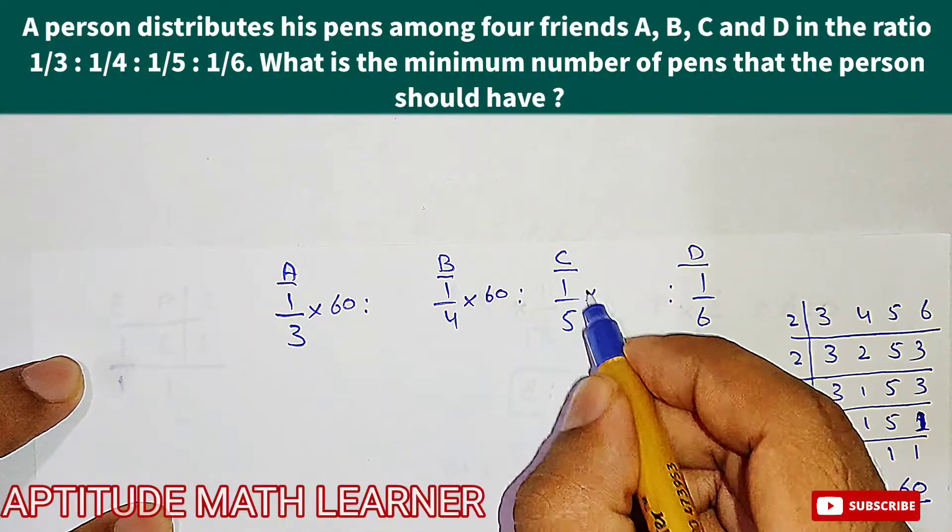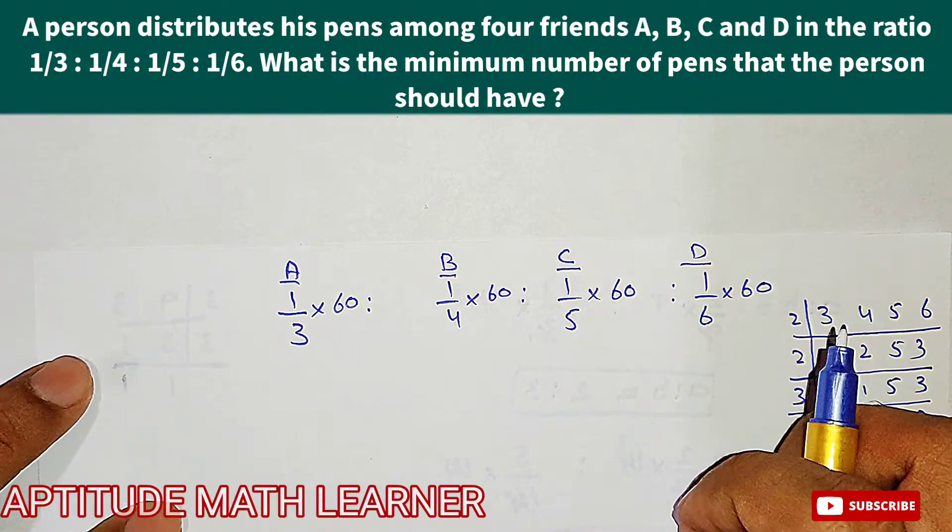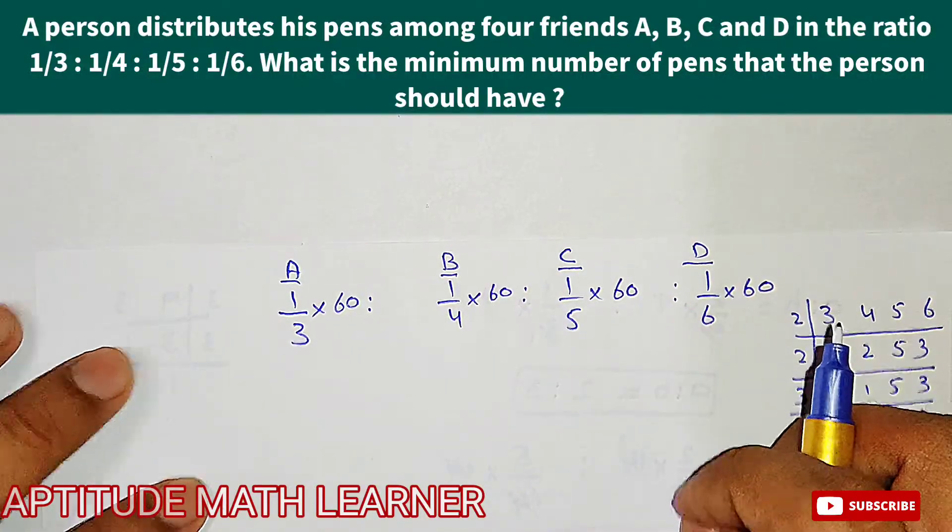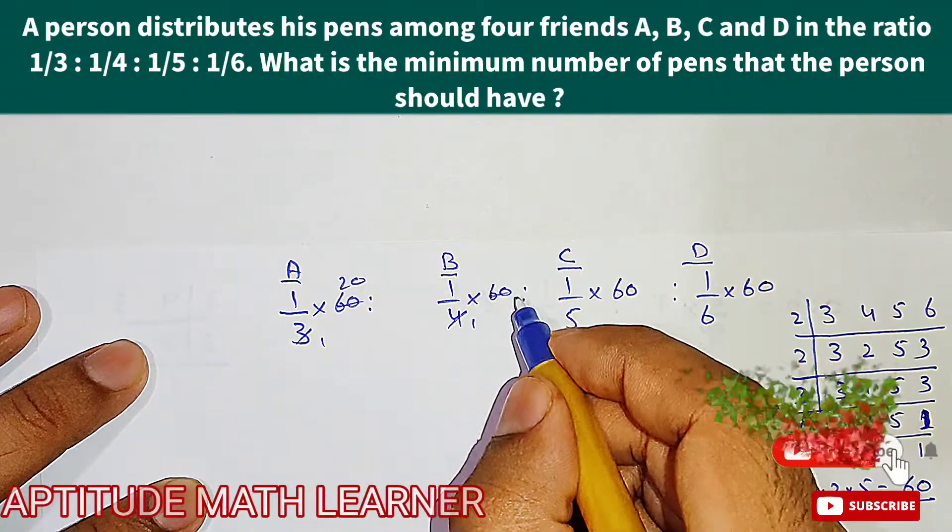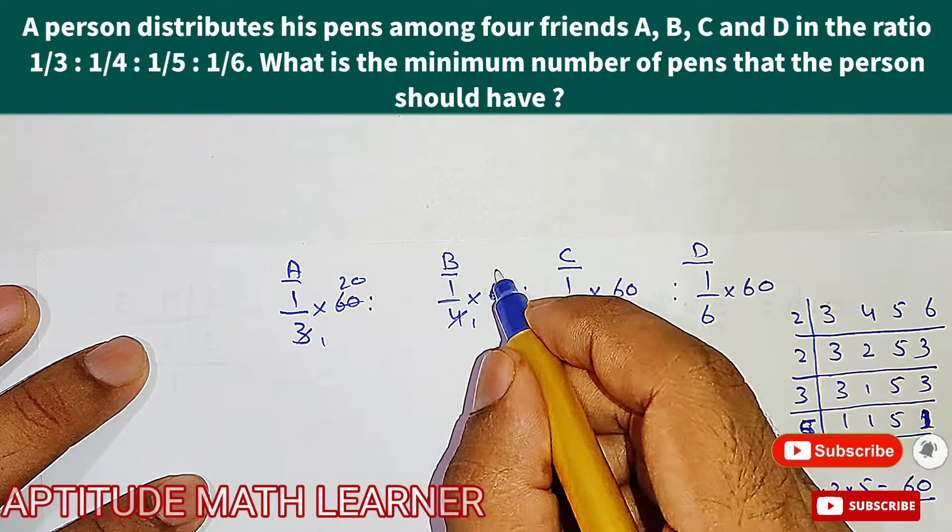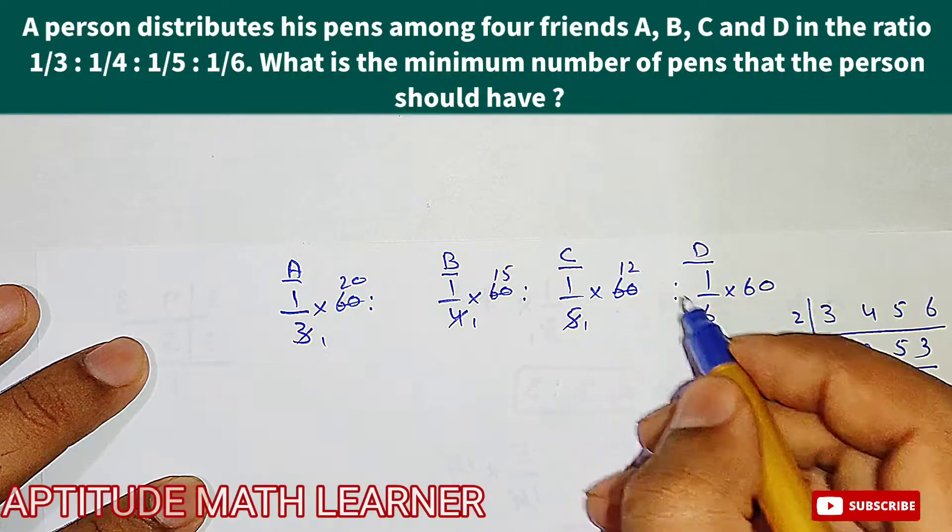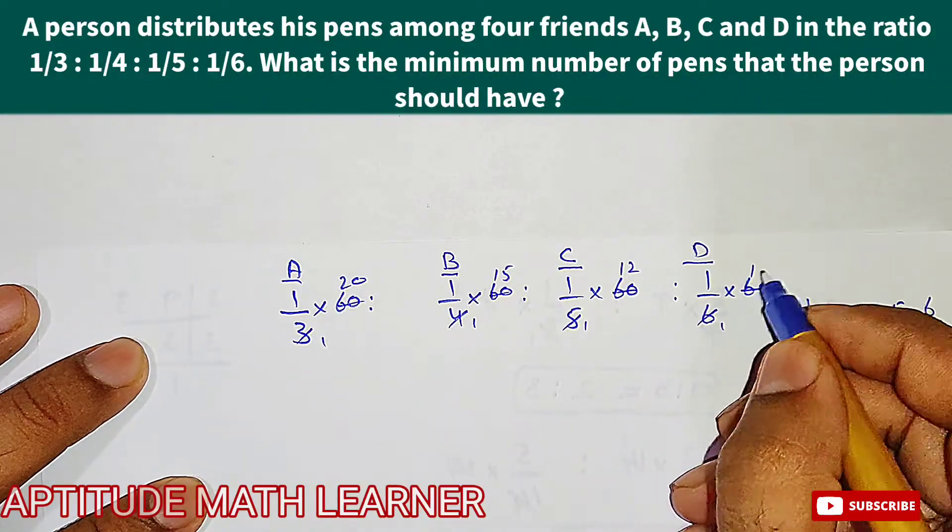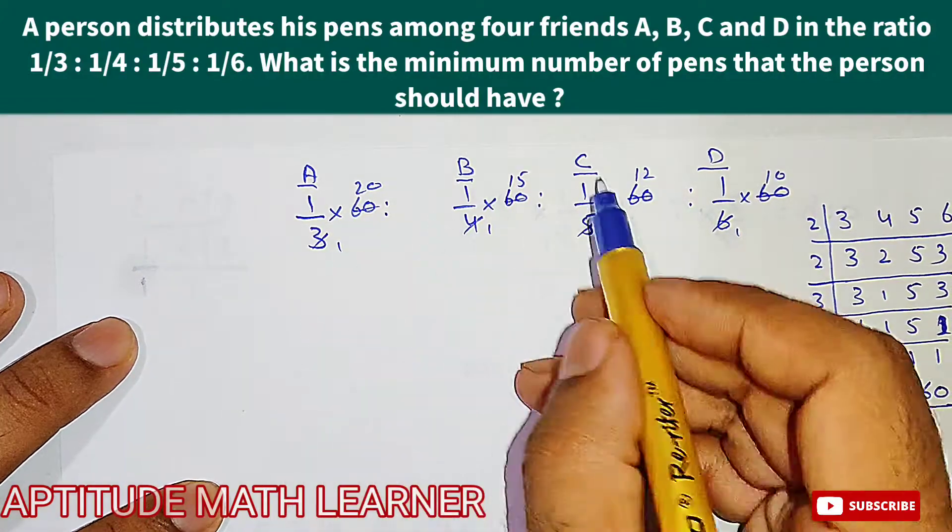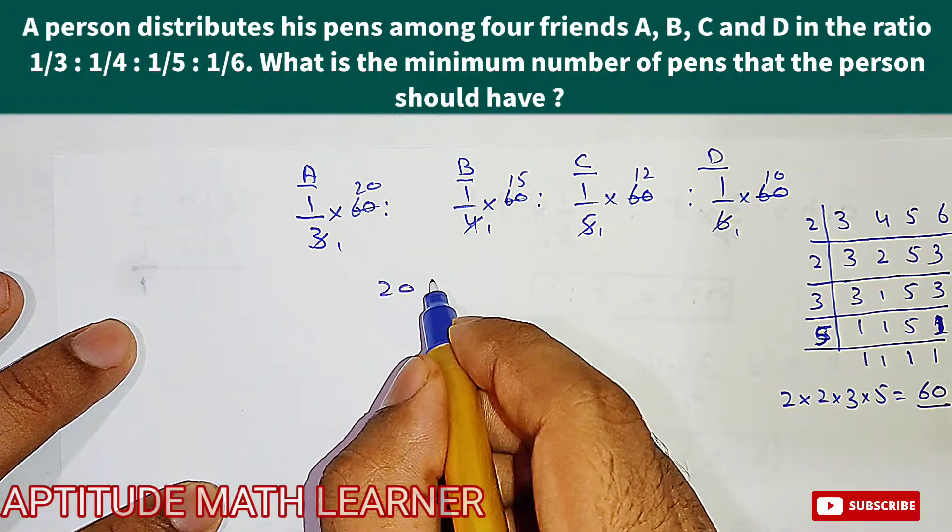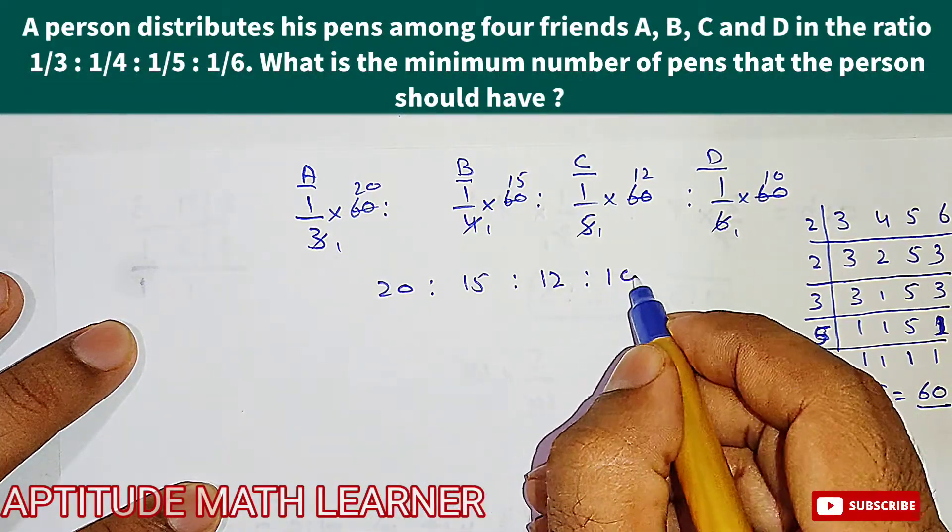Multiply by 60 for all of these. If we divide, here we get: 60 divided by 3 is 20, 60 divided by 4 is 15, 60 divided by 5 is 12, and 60 divided by 6 is 10. So here we have got the ratios for A, B, C, and D: that is 20 : 15 : 12 : 10.